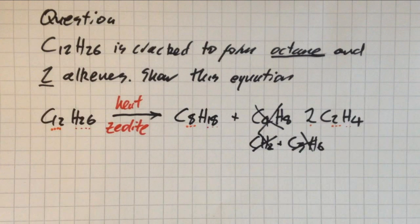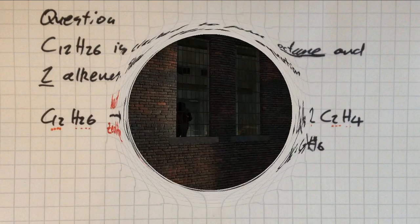Anyway, so that's two ethenes. And now when you add up the reactants and add up the products, they're equal. It's an equation. Fantastic.